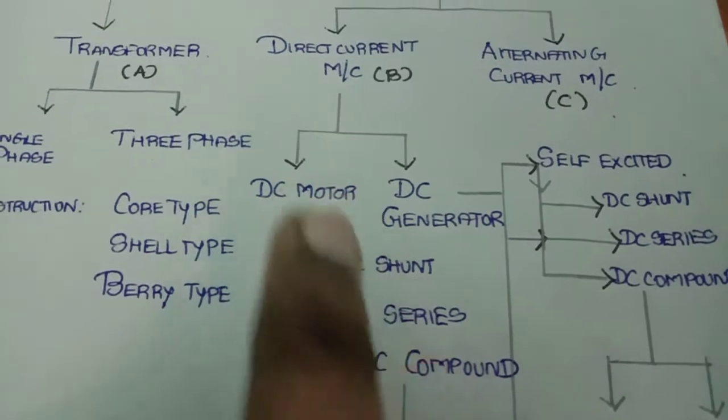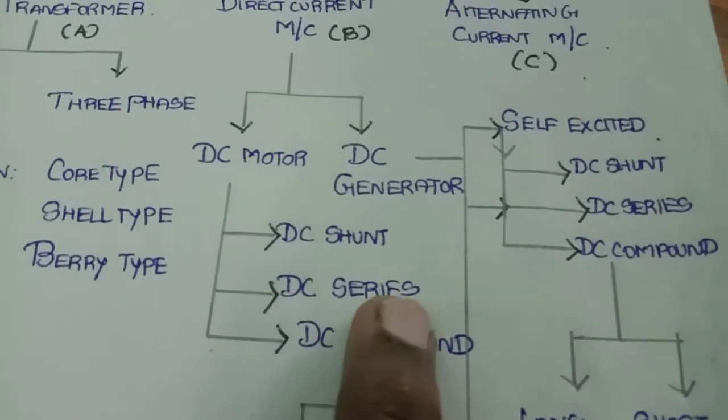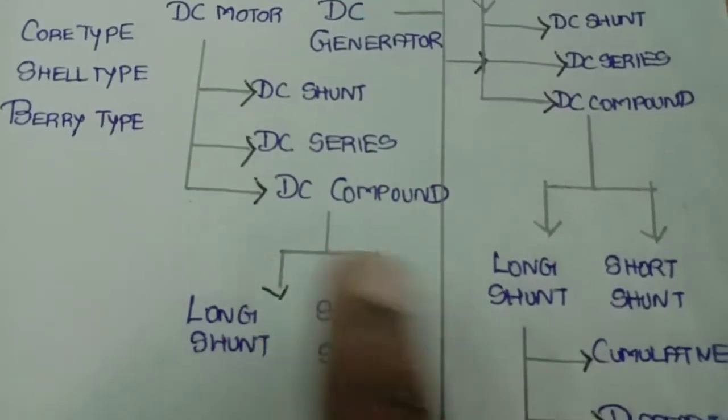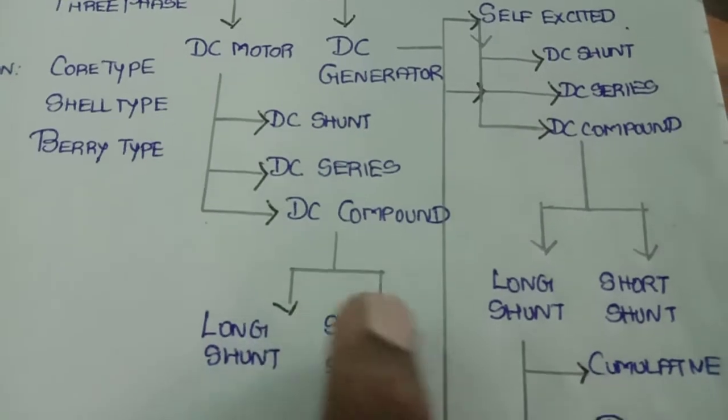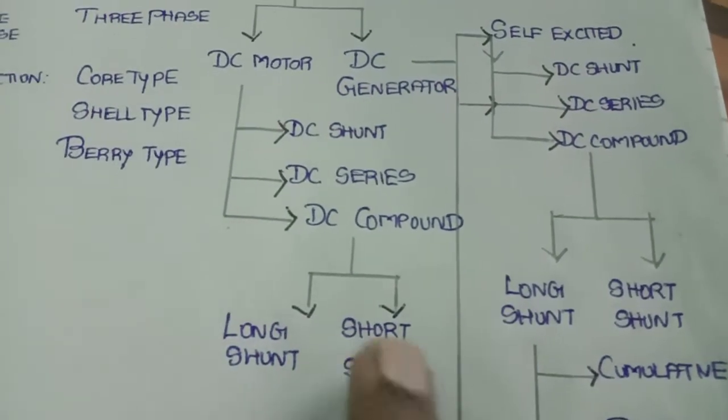Now take a DC motor. There are different types of DC motor: DC shunt motor, DC series motor, and DC compound motor. This compound motor is classified based on the arrangement of the two windings, that is shunt winding and series winding. We can say long shunt and short shunt.